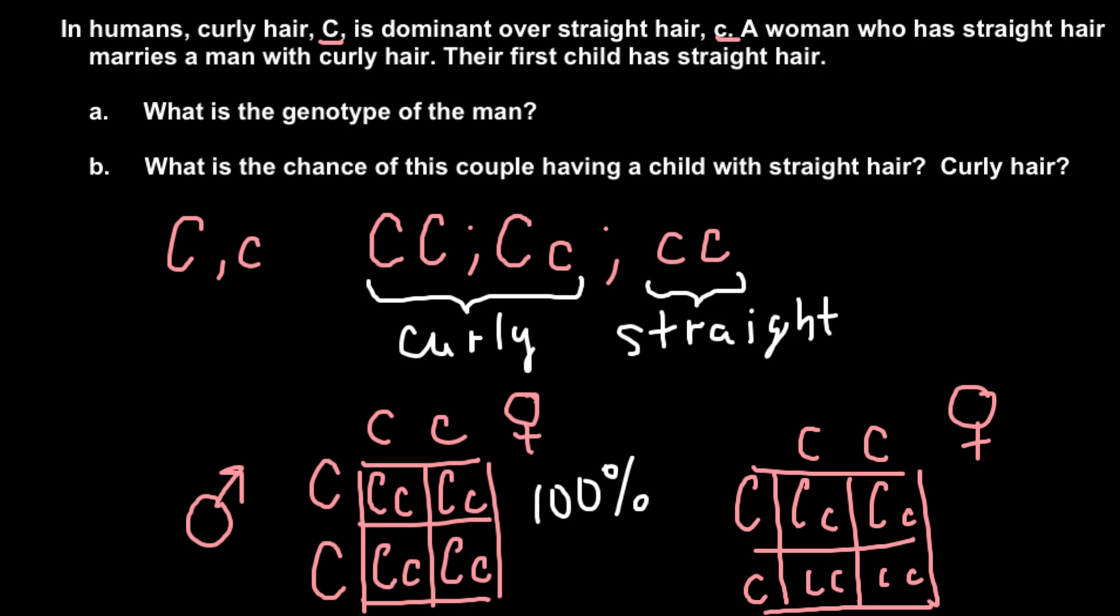So now we can answer the question: What's the genotype of the man? So the genotype of the man is capital C, small c—just what we have here. So this is the answer: capital C, small c.